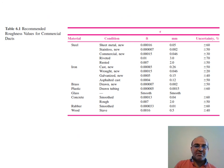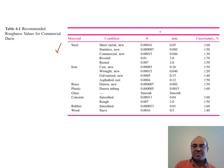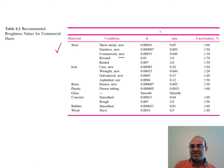This is the roughness table listing values for commercial ducts and tubes — steel, iron, brass, plastic, glass — under different conditions. Values are given for new pipe in both English and SI unit systems. Roughness may change during operation, adding some uncertainty to the values.